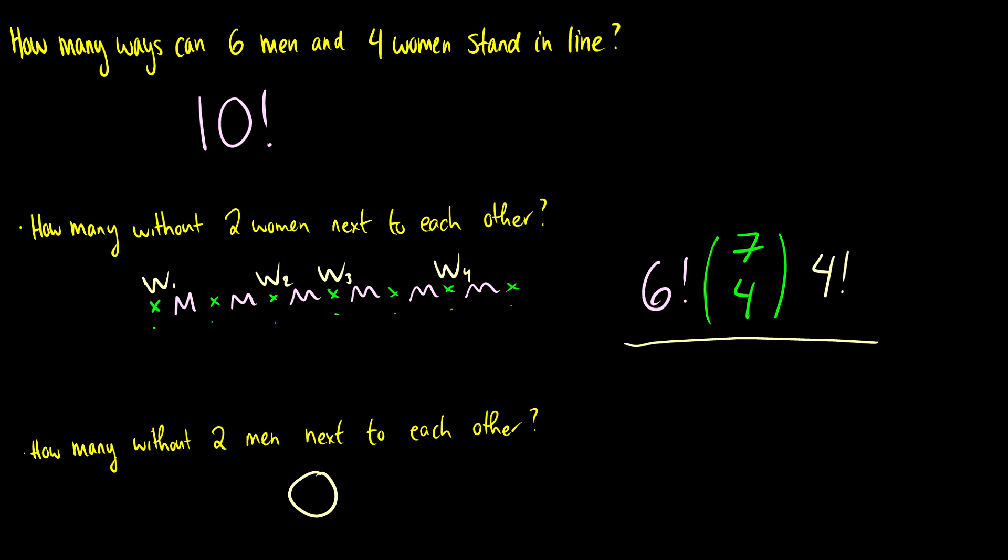Why? Because there's two more men than there are women. So if you have four women, you can order them like this: one, two, three, four. And how many spots are there to put the men? Well, there's only five spots we can place the men. But we have six men.